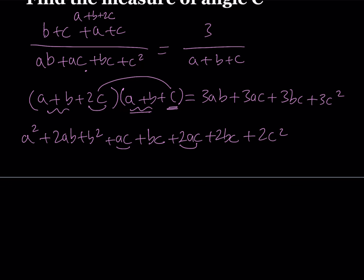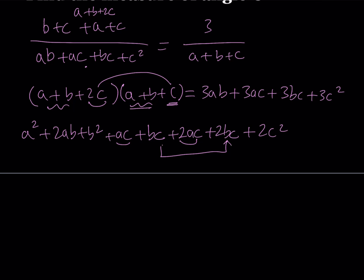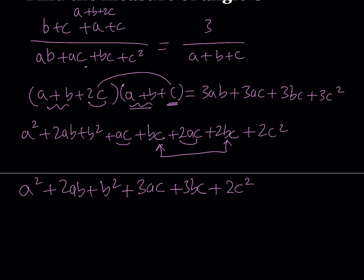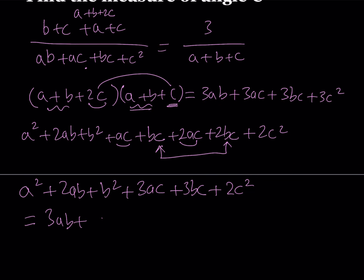So here we have some like terms. AC plus 2AC makes 3AC, and the BC terms make 3BC. So let's go ahead and rewrite it: A squared plus 2AB plus B squared plus 3AC plus 3BC plus 2C squared. And on the right hand side we have 3AB plus 3AC plus 3BC plus 3C squared.